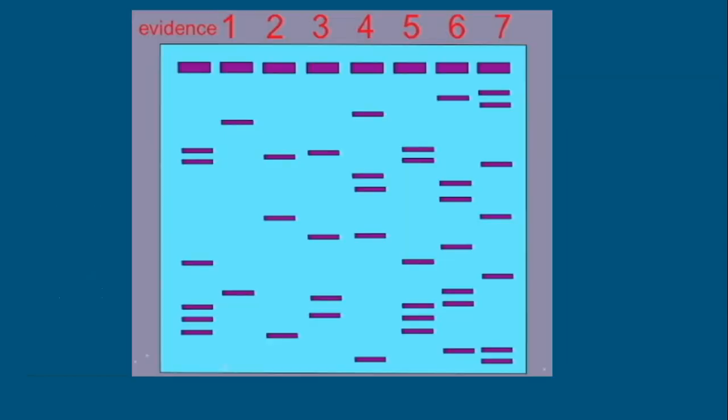So you can see here with this evidence, I have seven suspects, but it's pretty clear that suspect number five has matching bands to all of the bands in the evidence, which means suspect five did leave that DNA evidence behind. It doesn't mean that suspect five committed the crime, only that he or she left that evidence at the crime scene. So it's up to the lawyers to determine whether or not that meant suspect five committed the crime.